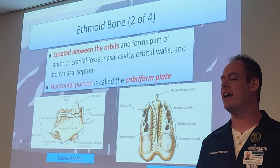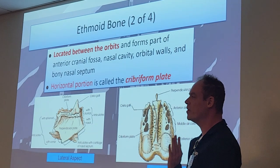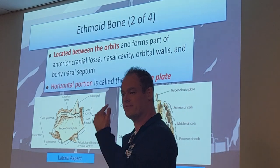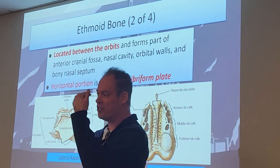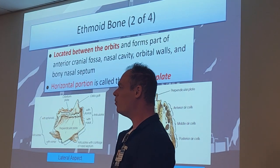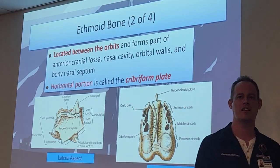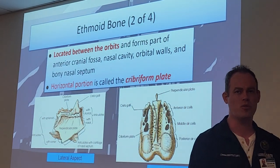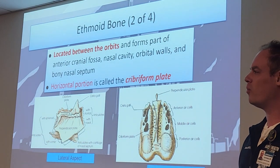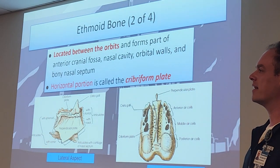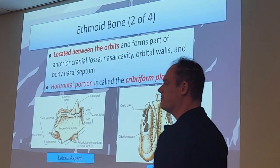The ethmoid bone is located between the orbits, basically behind your nose. It contributes to the anterior cranial fossa, the nasal cavity, the orbital walls, and as mentioned, the bony nasal septum.